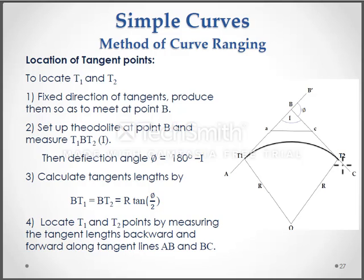Locate t1 and t2 points by measuring the tangent length backward and forward along tangent lines AB and BC.